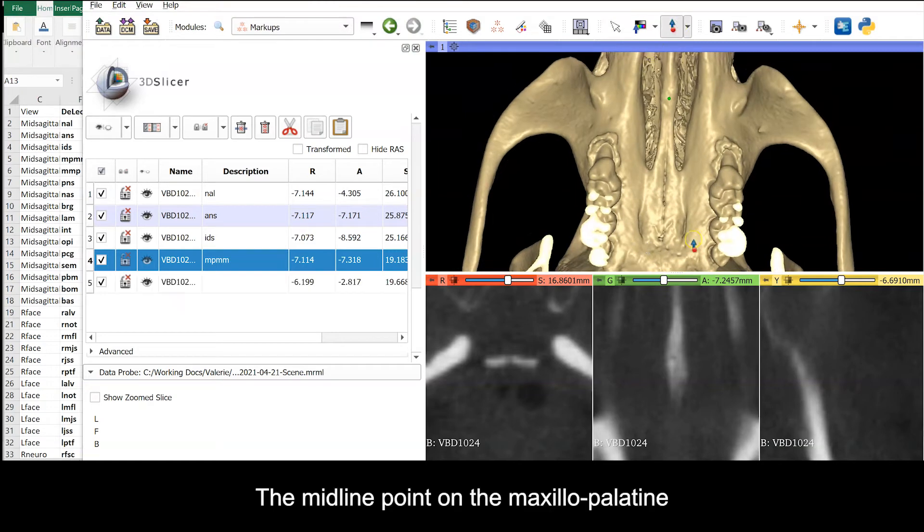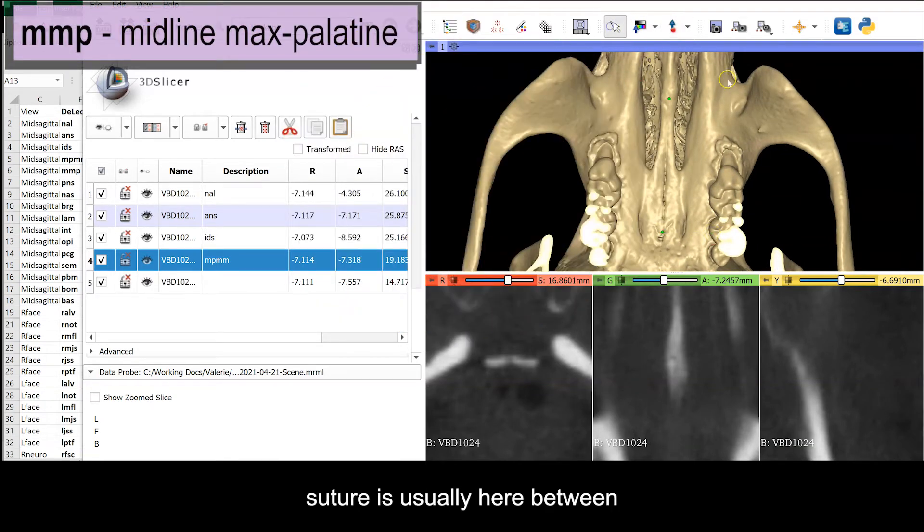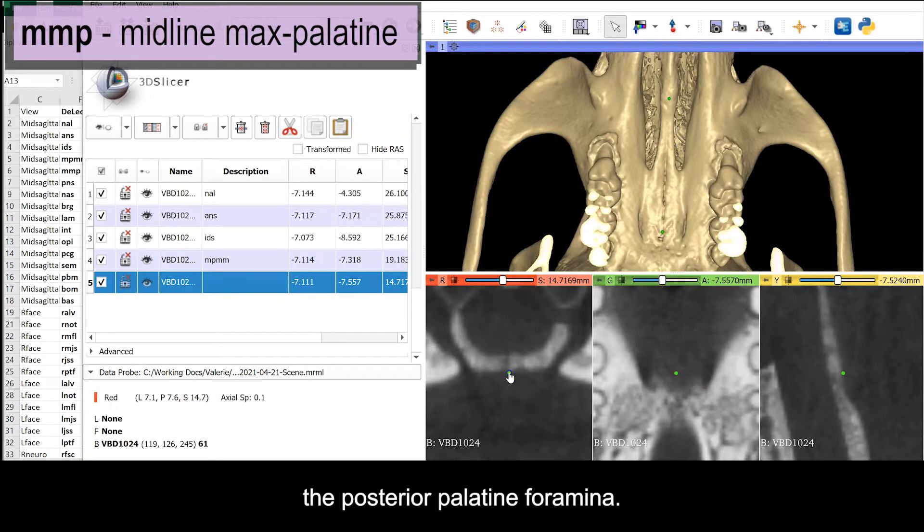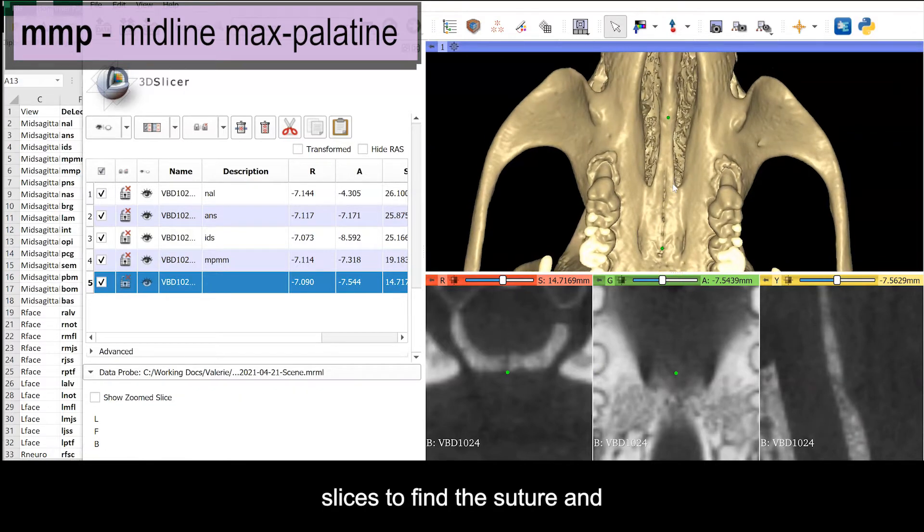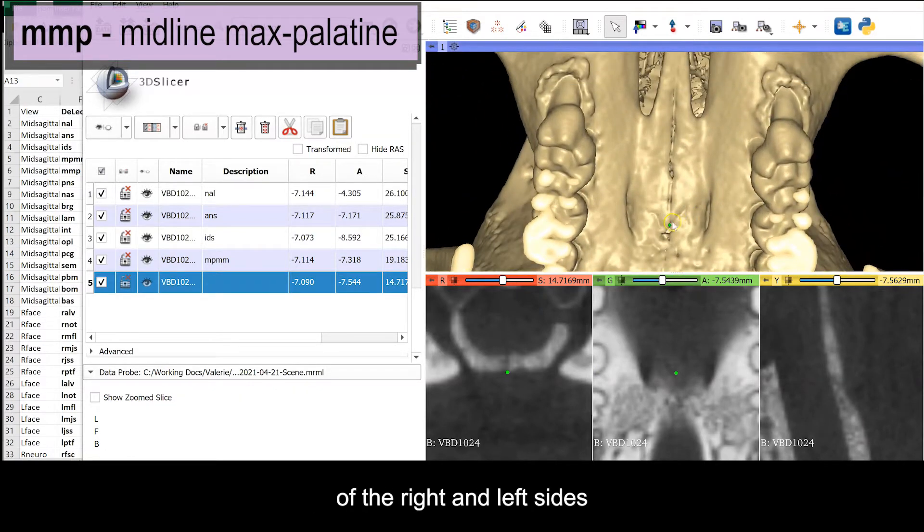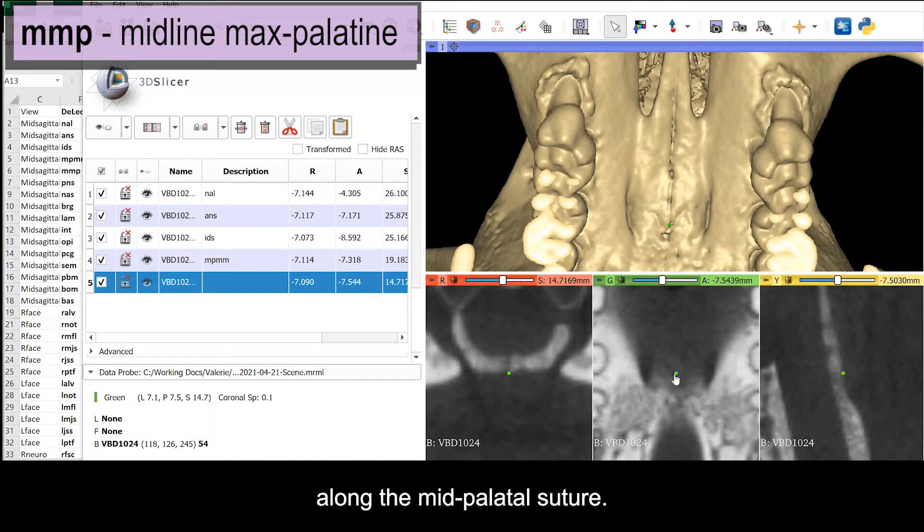The midline point on the maxillopalatine suture is usually here between the palatine foramina. There's often asymmetry at this point as well, so scroll through the transverse slices to find the suture and place the point at the average of the right and left sides along the mid-palatal suture.